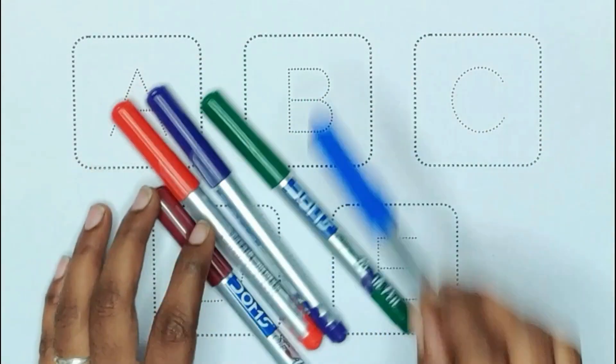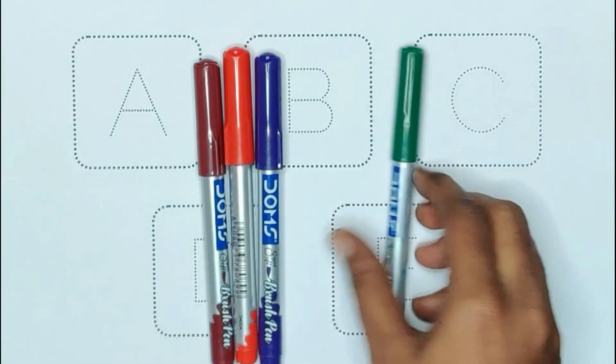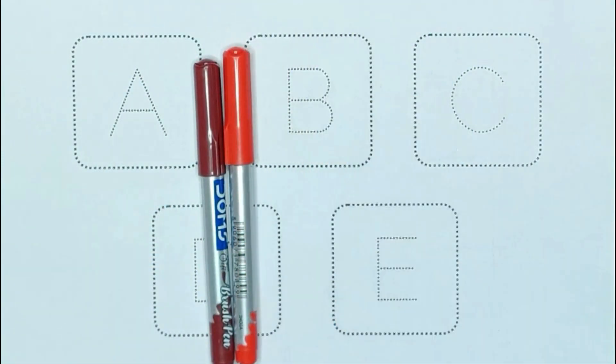Today we are learning alphabets with colors. Blue color, green color, violet color, red color and brown color.